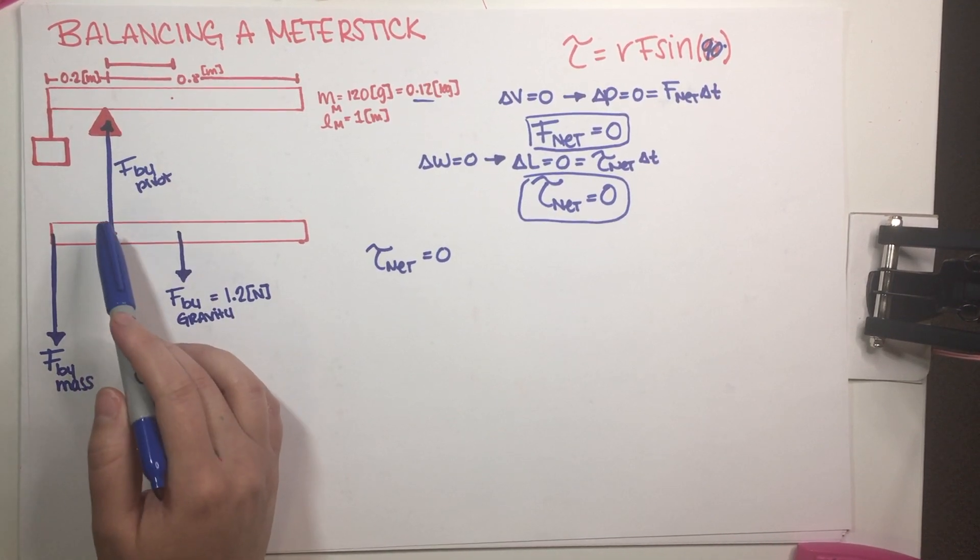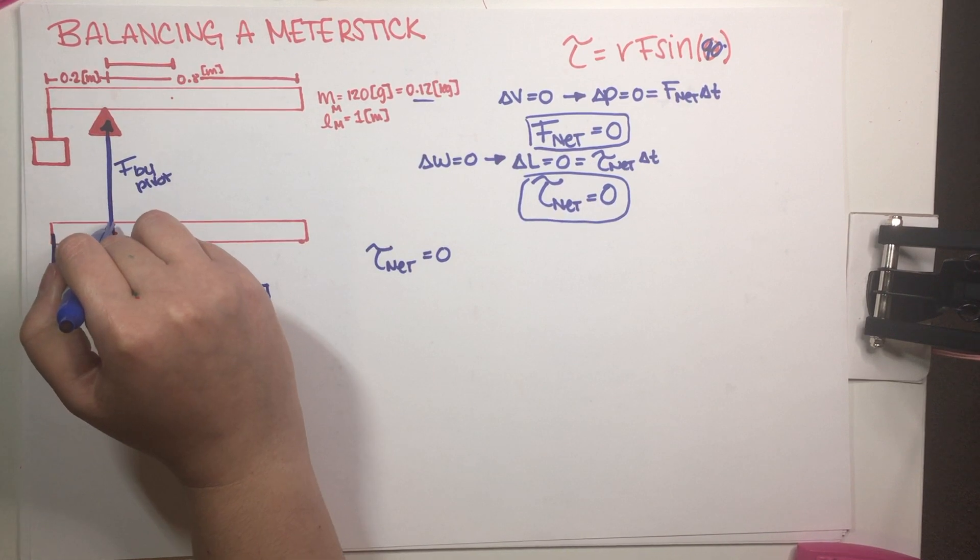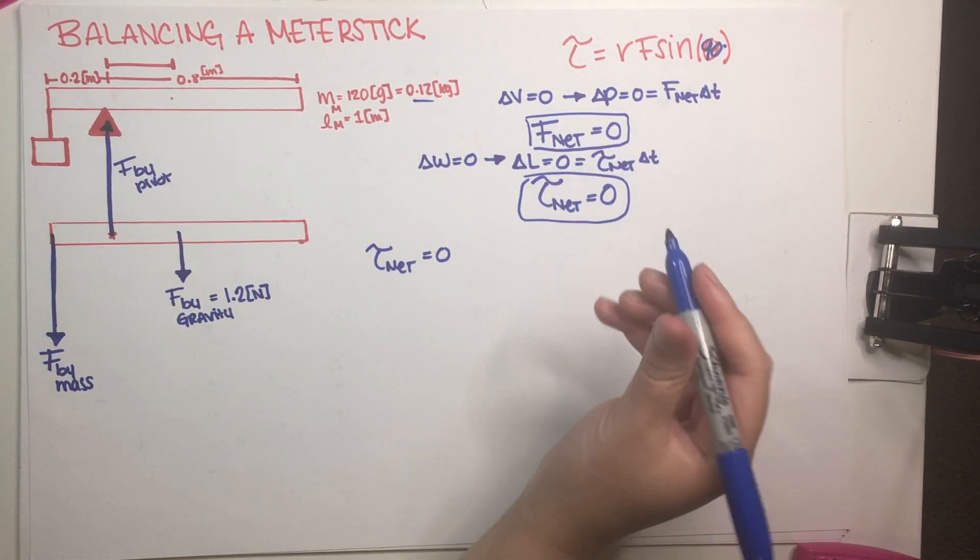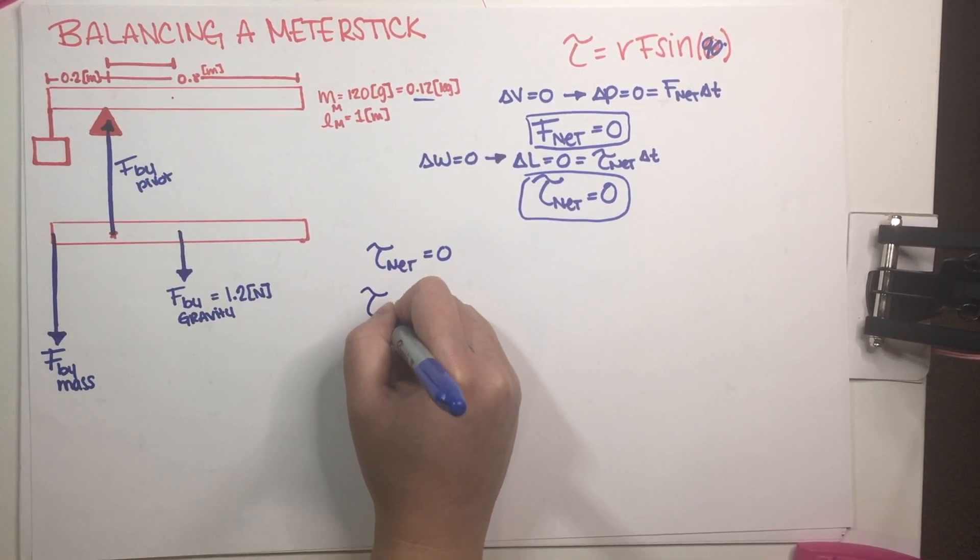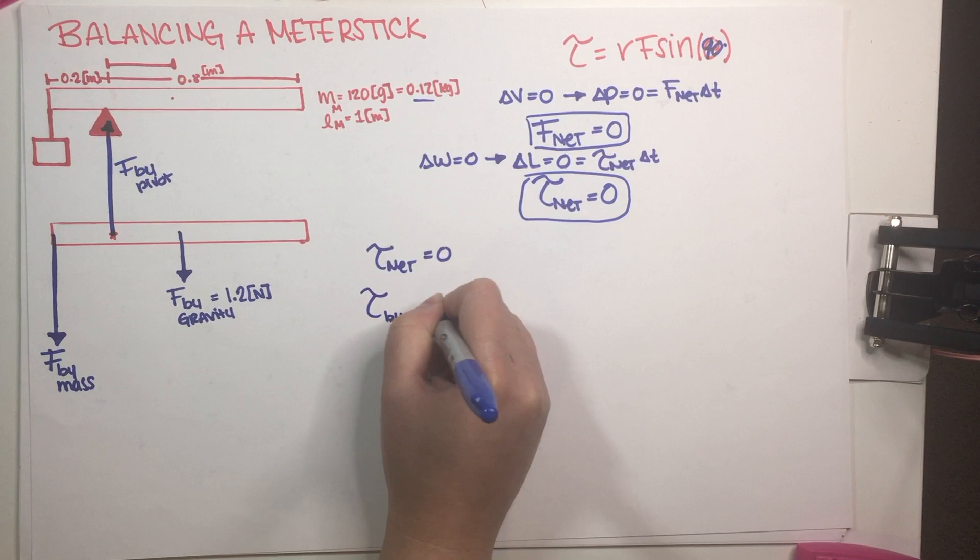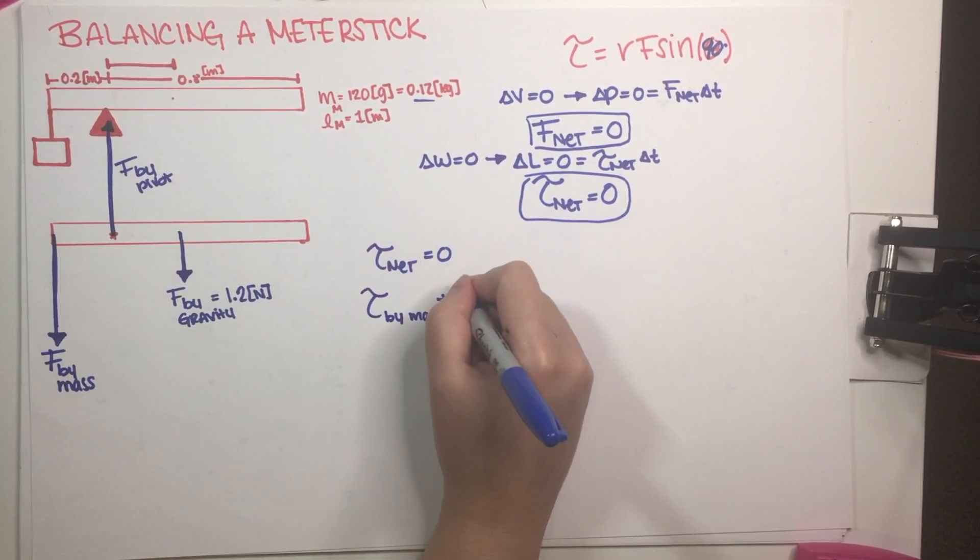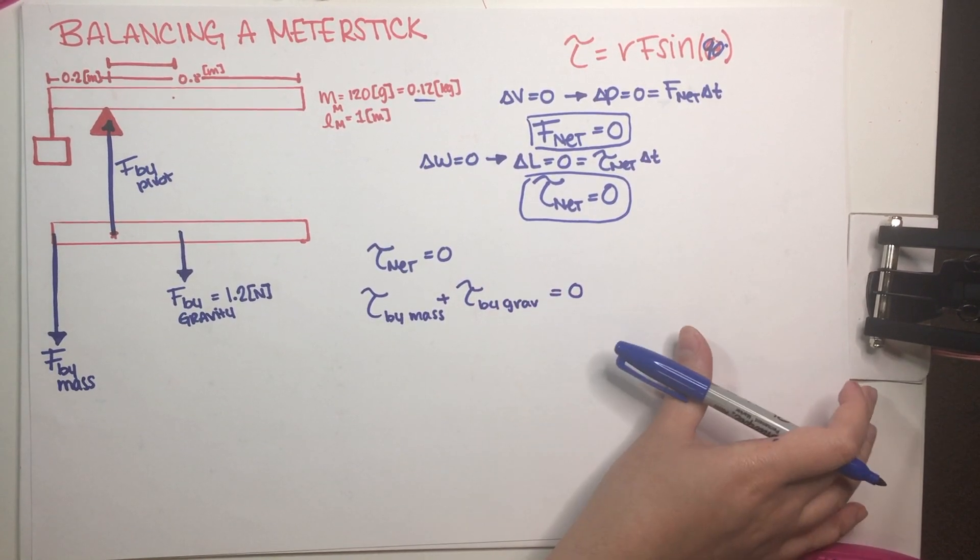Force by pivot is not generating a torque because R is equal to zero. This force is being applied exactly at the pivot point. So the only two forces that we have going on are force by mass, which is going to generate a torque by mass, and the other force is the torque due to gravity. And they have to add up to zero.